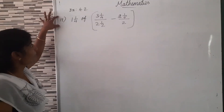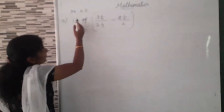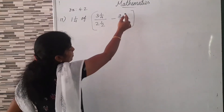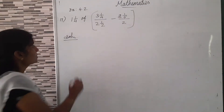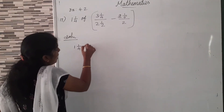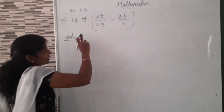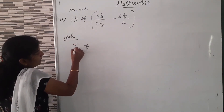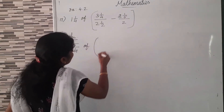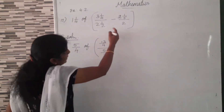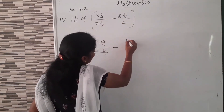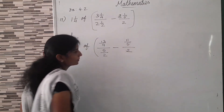Exercise 4.2, Question number 17. The expression is: 1 and 1/4, of 3 and 1/4, divided by 2 and 1/2, minus 2 and 1/5, divided by 2. First preference for bracket. So we can write 1 and 1/4 of. Now we can convert into improper fractions. 2 and 1/3: improper fraction is 5/4. Then 13/4 divided by 5/2. And 2 and 1/5: improper fraction is 11/5. Divided by 2.